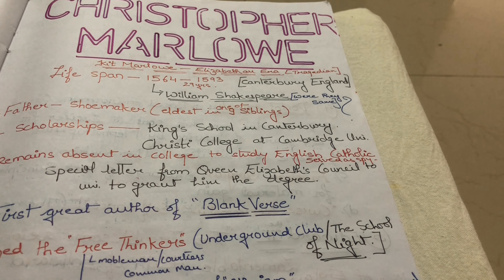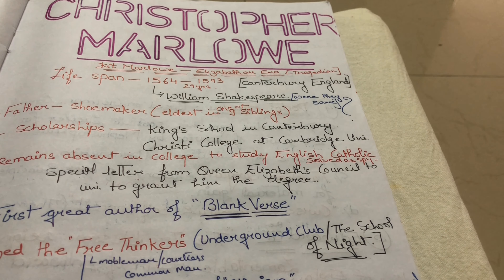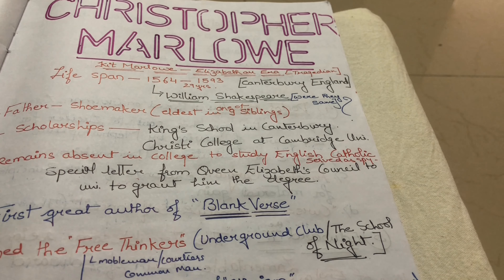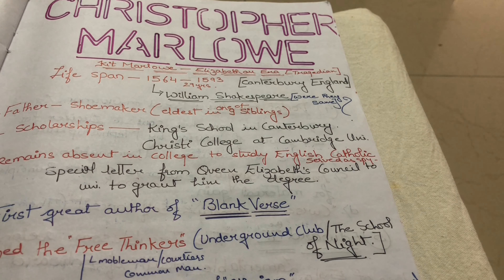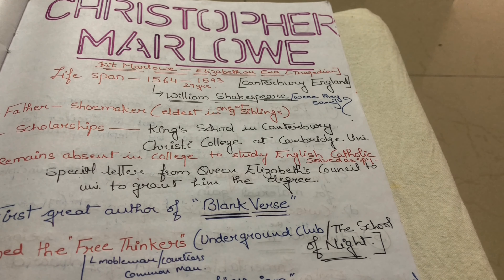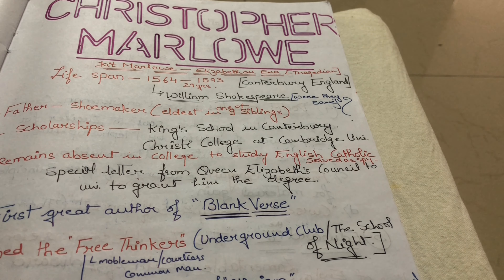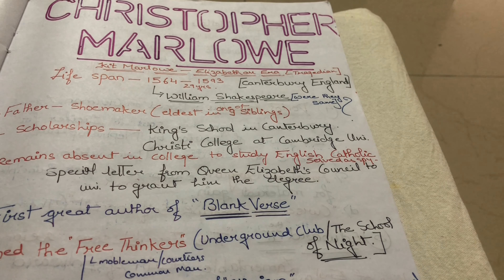This was all about Christopher Marlowe and his works. Only two works were published in his lifetime — Tamburlaine the Great Part I and Part II. The rest were published posthumously. Hope this will help you in your exam. If you like it, please like the video, subscribe to my channel, and hit the bell icon. All the best. Keep learning. Bye bye.